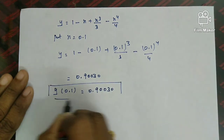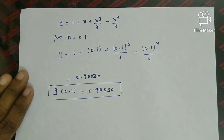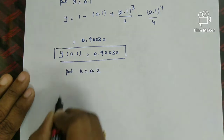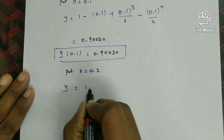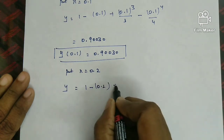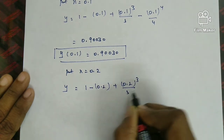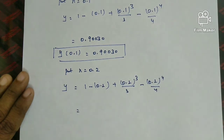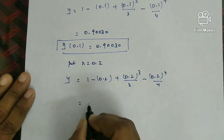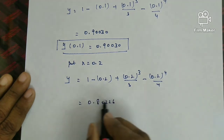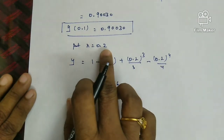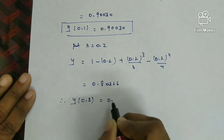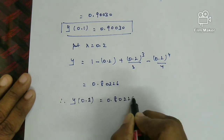Therefore, y of 0.1 equals 0.90030. Next, put x equal to 0.2: y equals 1 minus 0.2 plus (0.2)³/3 minus (0.2)⁴/4. The answer is 0.80226. Therefore, y of 0.2 equals 0.80226, to 5 decimal places.